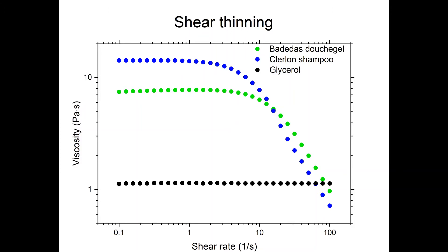We made a flowchart to show that both shampoos are shear thinning because their viscosity decreases as the shear rate increases, and glycerol has a constant viscosity for every shear rate.